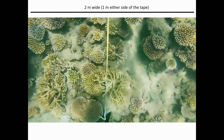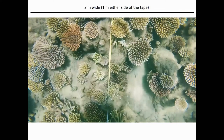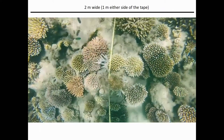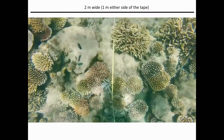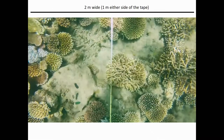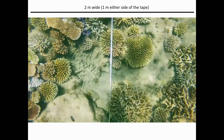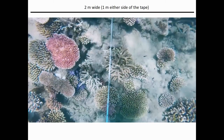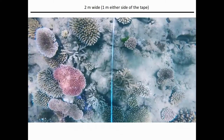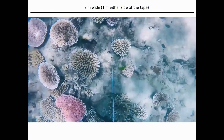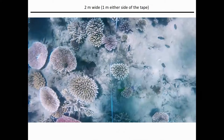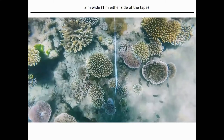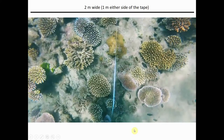Here we have our video transect of a site permanently marked around Orpheus Island. You can see a picket in the ground and we're swimming along the transect laid out along the reef substratum, keeping at a fixed height so we're measuring a constant area each side of the transect. We can convert this video into still images and use those photos to count how many corals of different types are present at our reef.